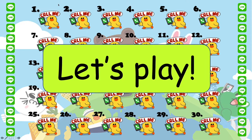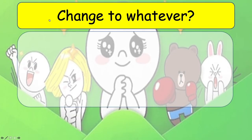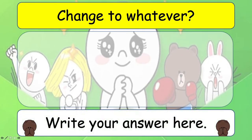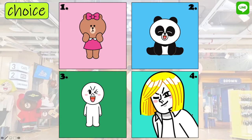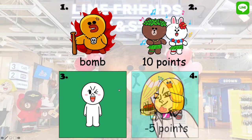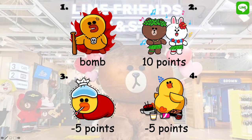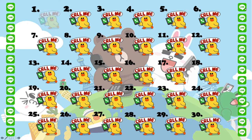I'm going to choose number one to start with. Change it to whatever you like, then click on the white rectangular box or push the space bar. Question number one is actually a choice slide — and there's a bomb: ten points, minus five points, and another minus five points there.